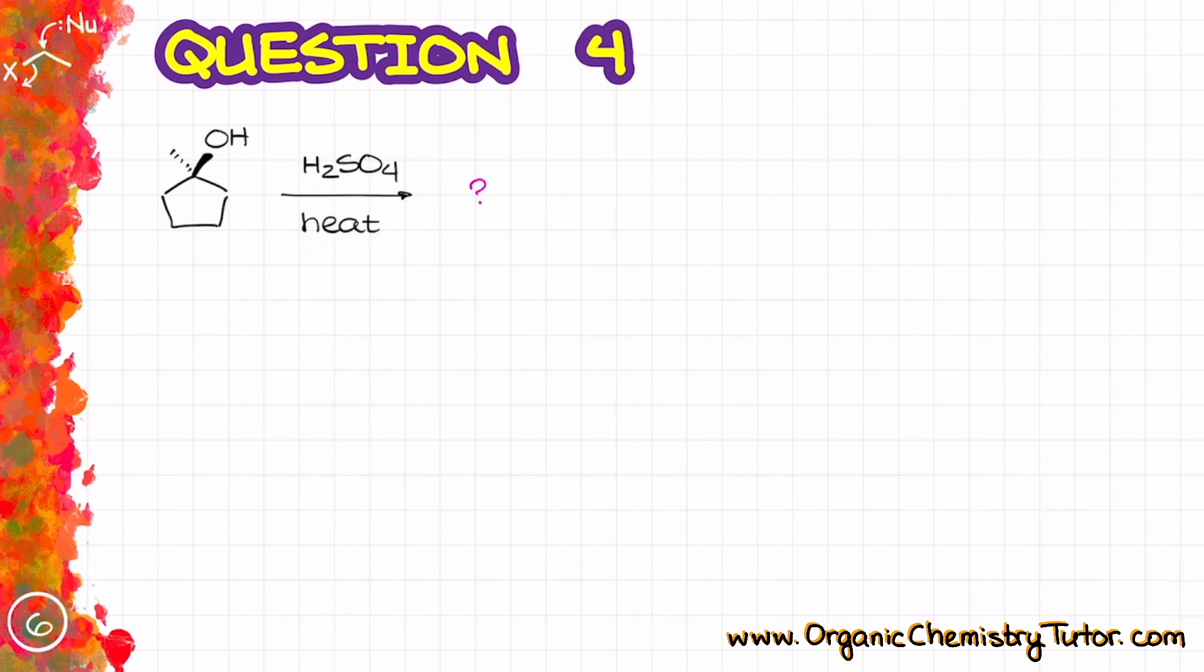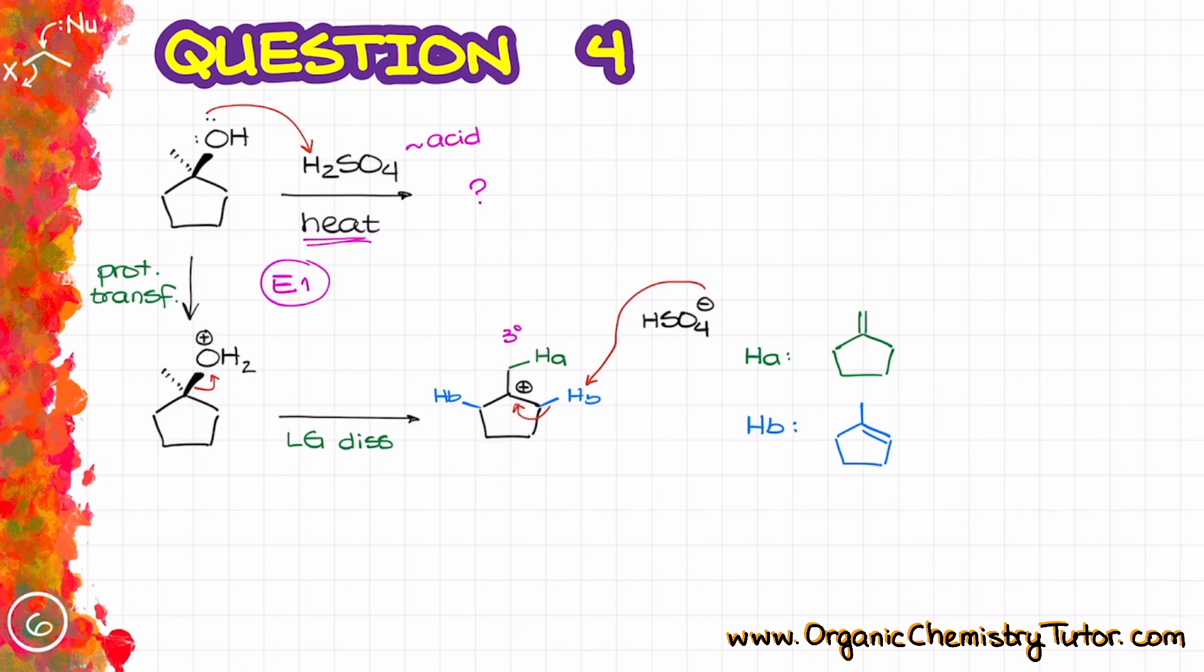Here is the next question. In this question we have sulfuric acid which is well it is acid so by definition it's going to be a poor base in a nucleophile and we also have heat so when we are reacting alcohols with acids in the elevated temperature that is essentially a classic recipe for the E1 reaction. And in this reaction if we go through the mechanism the step number one is going to be proton transfer to make our OH into a better leaving group. OH by itself is not a good leaving group in acidic conditions so first we have to protonate that.